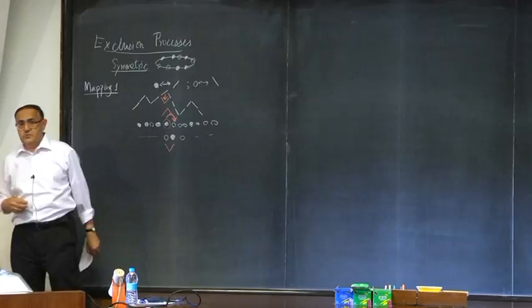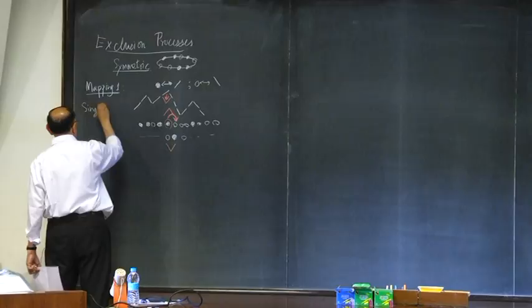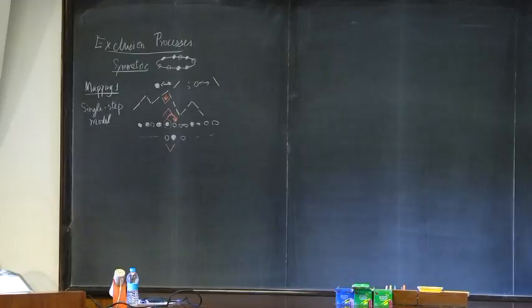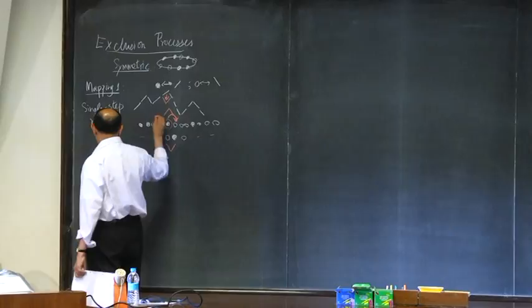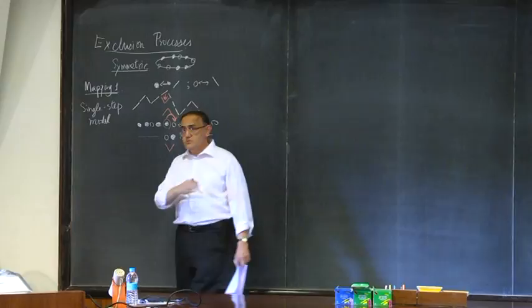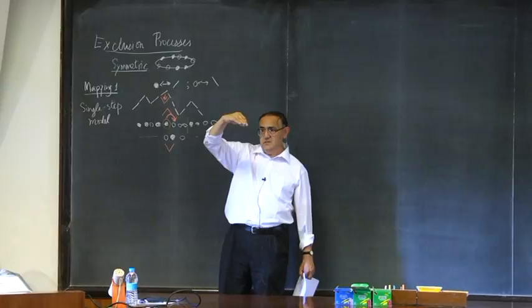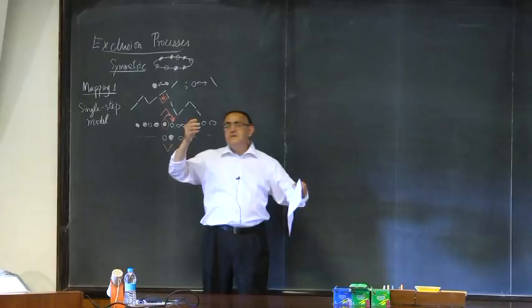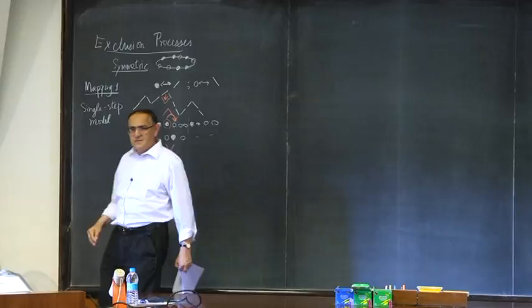This model actually has a name in the applied math literature — it's called the single step model. The height at any point is just the sum: when you have up-links, height increases; down-links, height decreases. So the height up to some point is the total number of particles minus the total number of holes up to that point — it's like the integral of the density fluctuation.